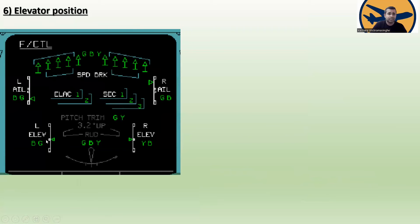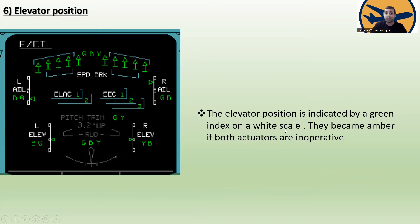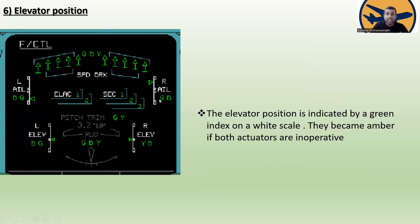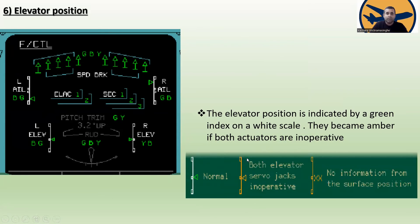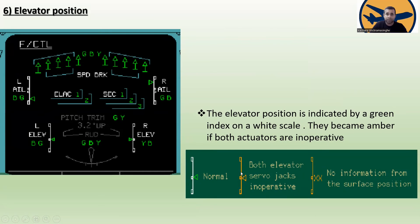Topic six is elevator position. The elevator position is indicated by a green index on a white scale, similar to the aileron. It becomes amber if both actuators are inoperative. The left elevator uses blue and green hydraulic servo jacks; the right elevator uses yellow and blue. Blue is common to both sides — green is for the left and yellow is for the right. This is an important distinction often asked in interviews.